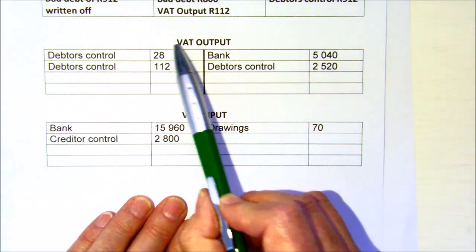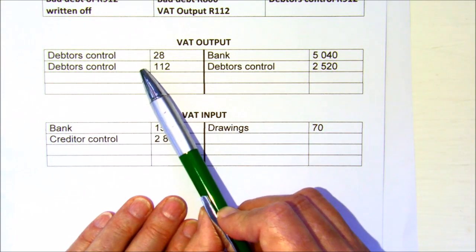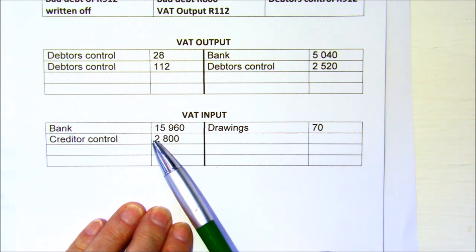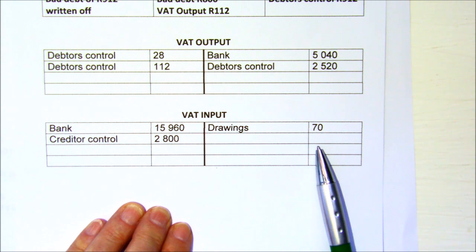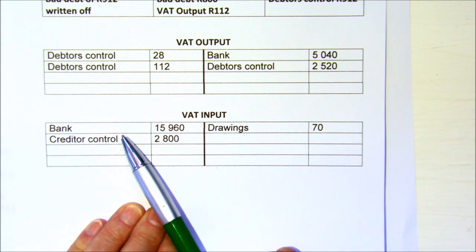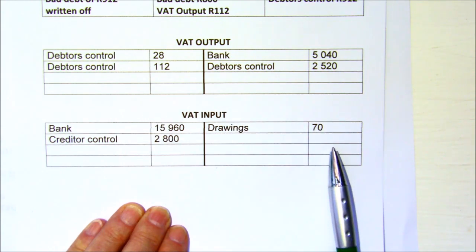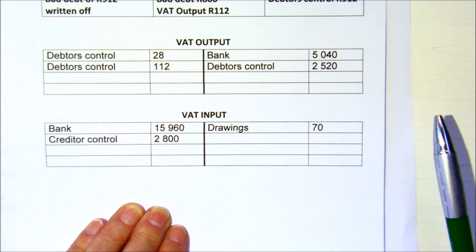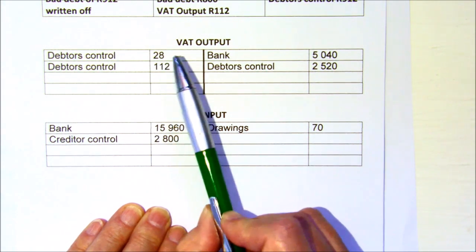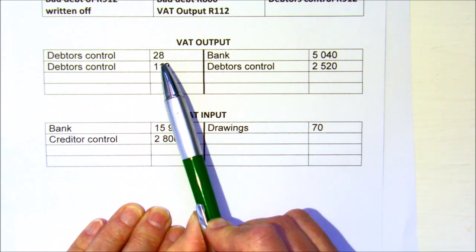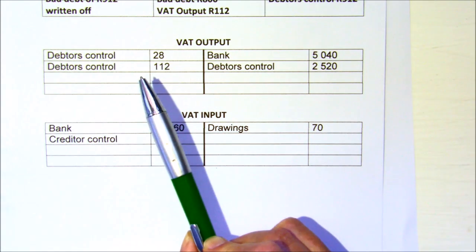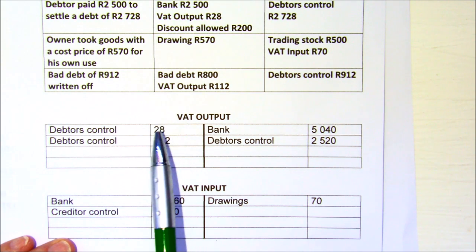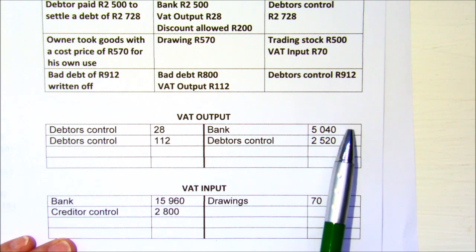That's what we owed SARS and we are now claiming back for the bad debt. If a debtor returned goods you would also claim back VAT. If you receive a discount you're not paying the full amount so you can't claim it all back — reduce the input. If you return some goods, likewise you can't claim the VAT because you don't have the goods. SARS operates fairly — they will not expect you to pay VAT on discounts or bad debts — but the business is expected to act ethically and be able to prove these transactions.